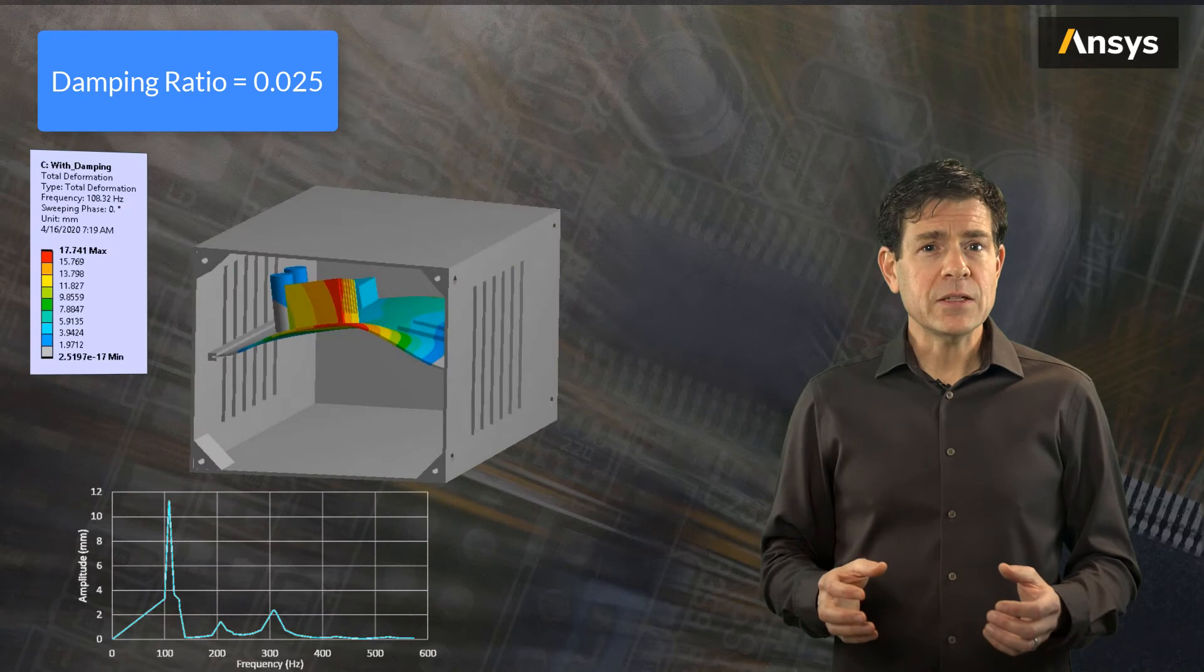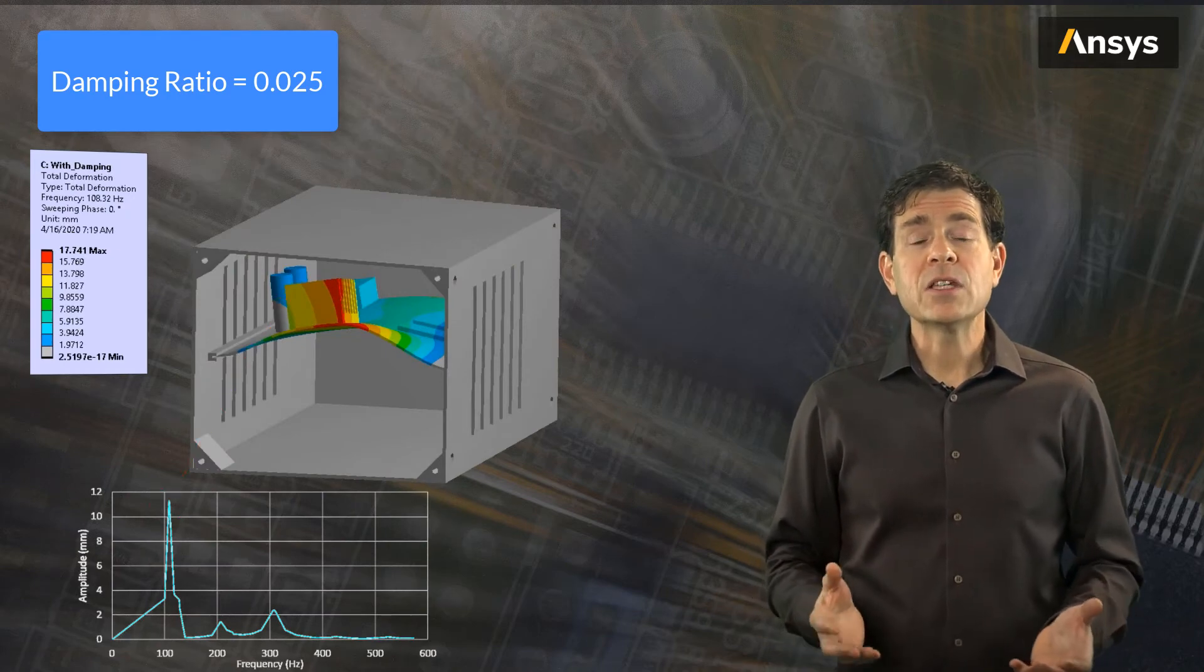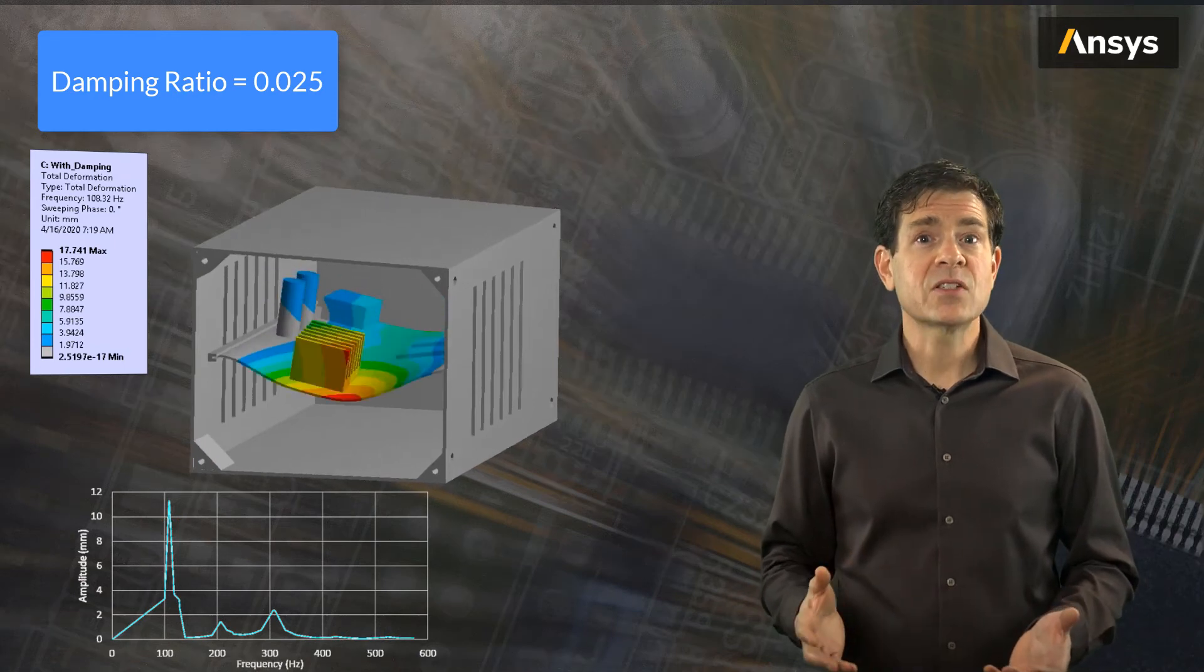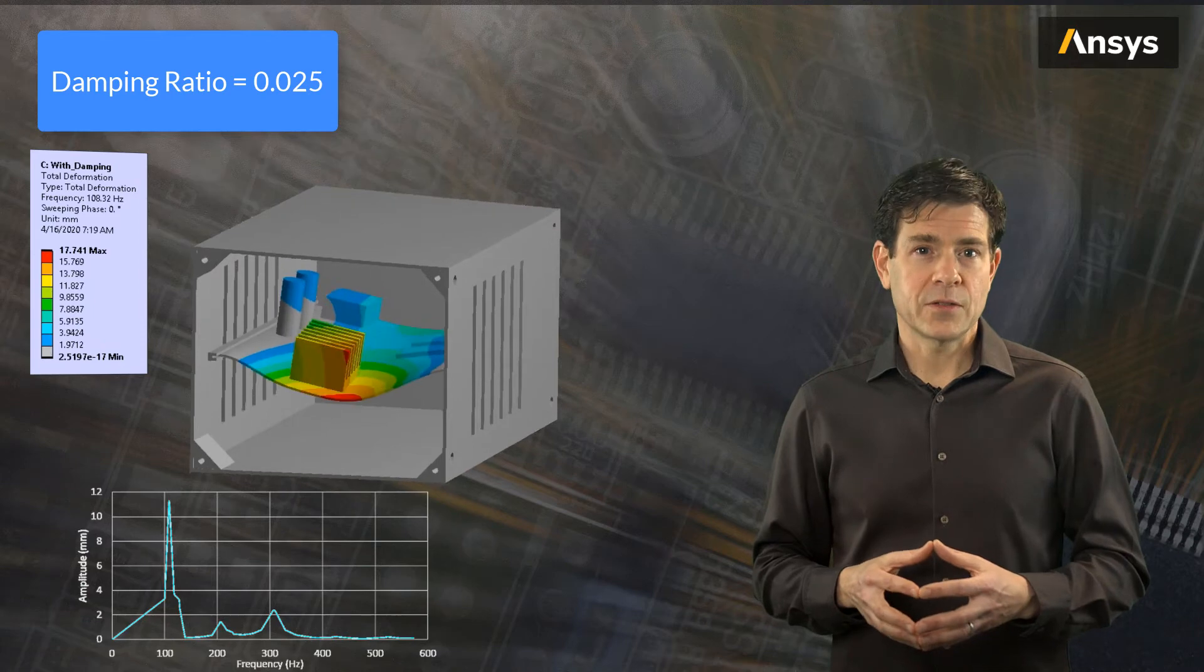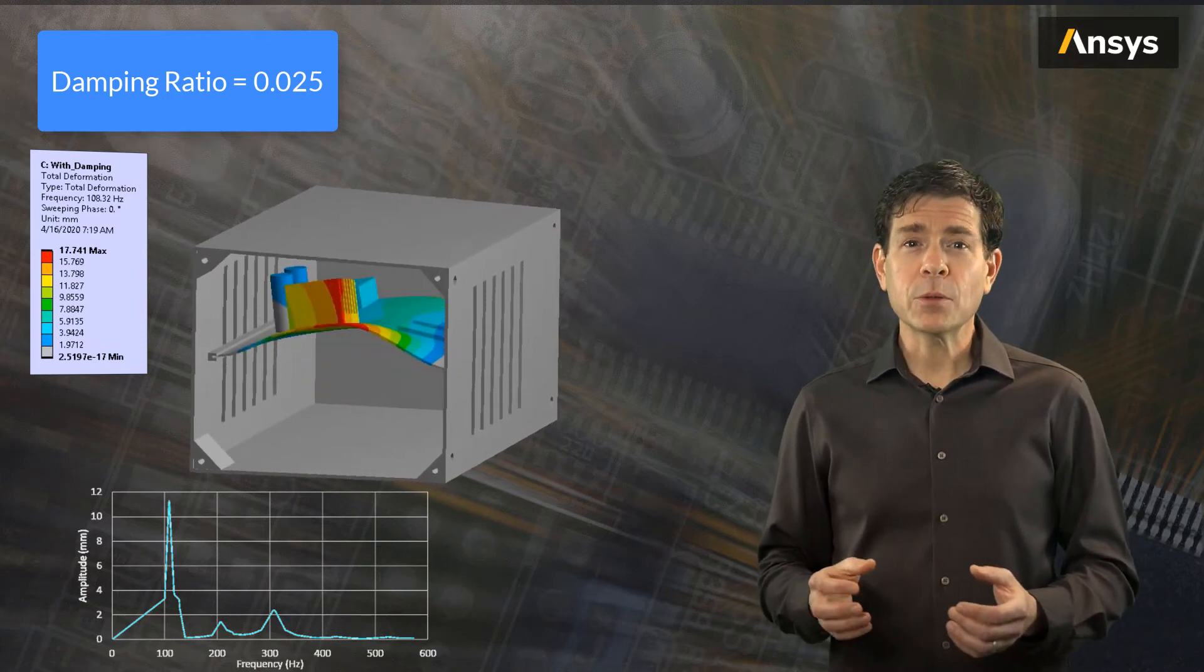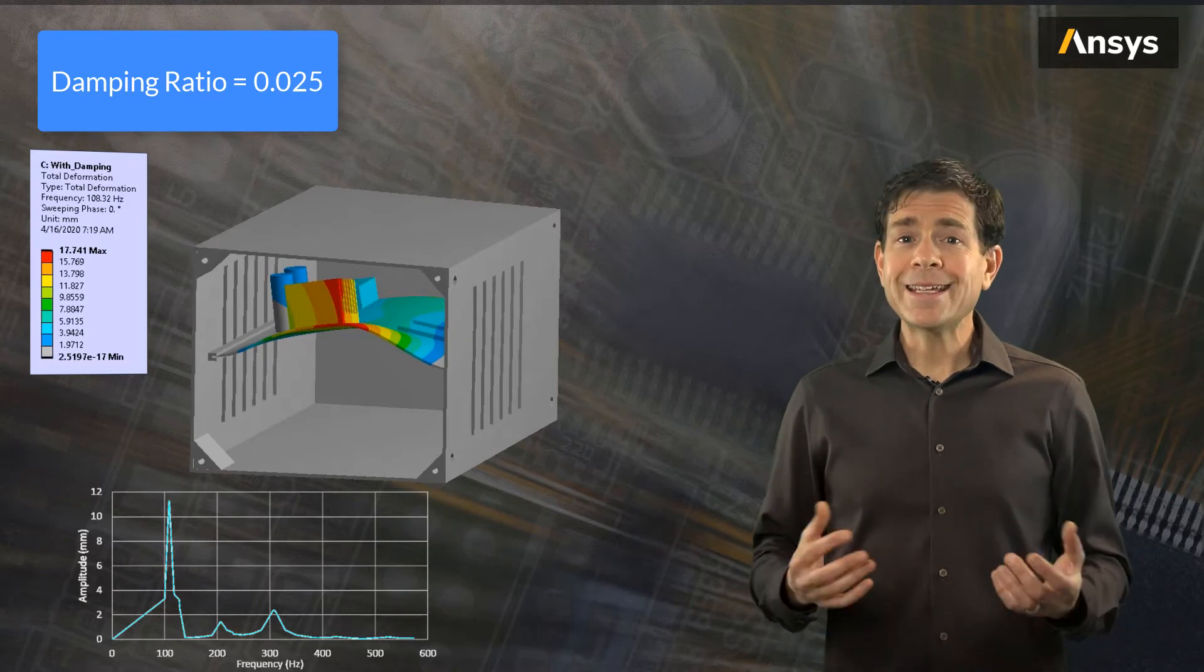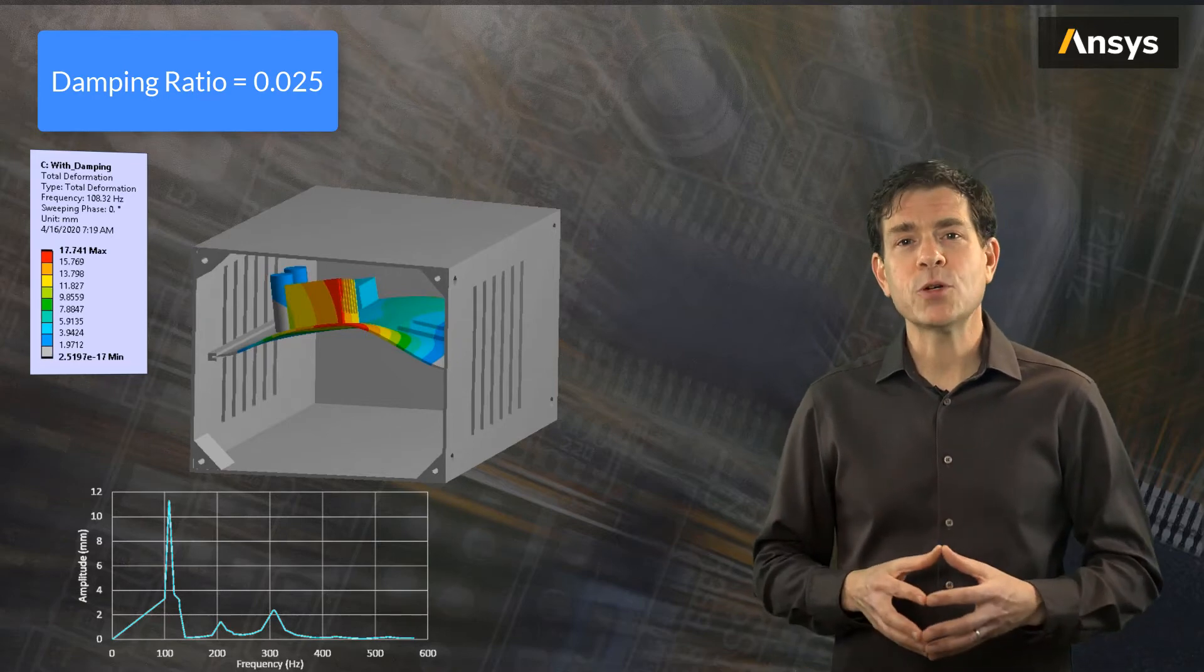But now have a look when we specify a more realistic damping ratio of 0.025 or 2.5%. Notice that the amplitude of the heatsink displacement shows 11.3mm at the peak. What is happening is the enclosure with the PCB is excited at one of its natural frequencies, so we expect some resonance. In this case, that seemingly benign 0.5mm applied displacement is getting amplified to 11.3mm, which is something we typically wish to avoid.